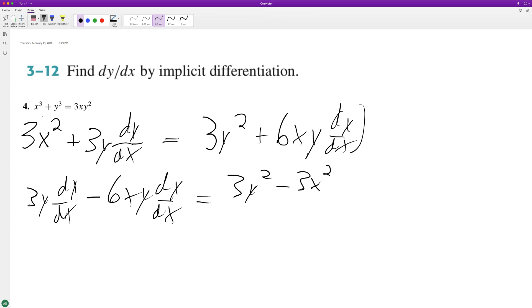So here we can factor out dy dx. We end up with 3y minus 6xy is equal to 3. We can factor out the 3.